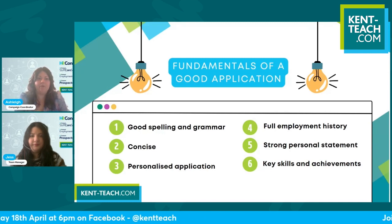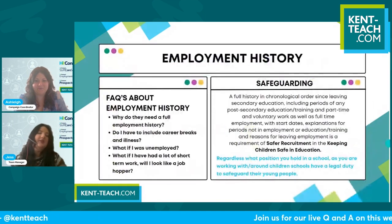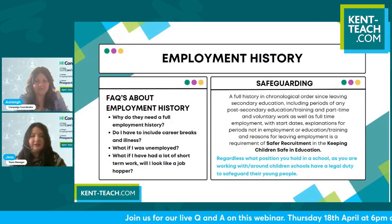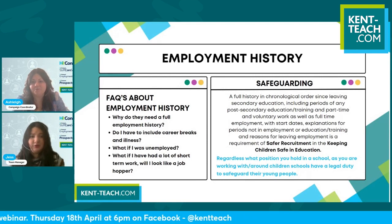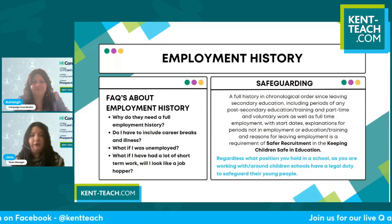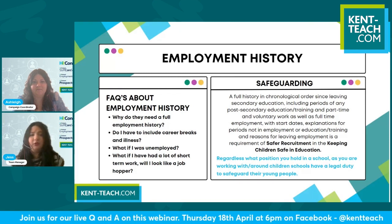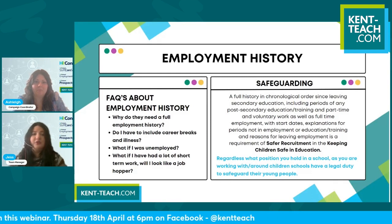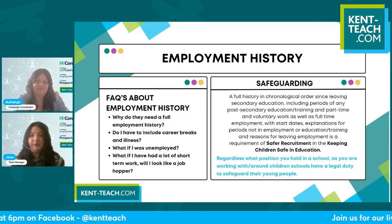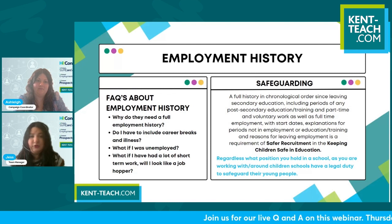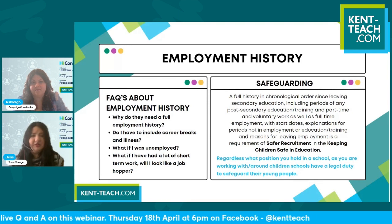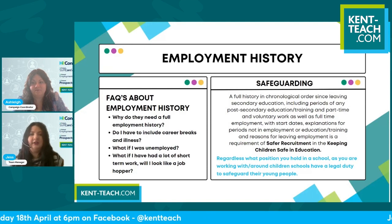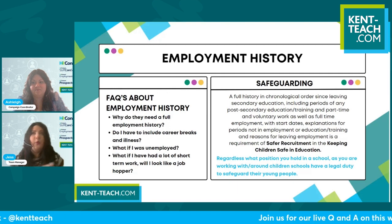Jess is now going to talk about the employment history section of the application. As we just touched on, employment history is a legal requirement for anybody working within a school. As part of safer recruitment, candidates need to provide a full chronological employment history from when they left secondary school education. The reason this comprehensive employment history is needed is due to the requirements within Keeping Children Safe in Education that schools have to follow, as you're working in an environment with children. It doesn't matter which position you are holding within a school — for example, if you're a cleaner coming in before the children's lessons begin, it doesn't make you exempt from these checks, as there's still a possibility that you could come into contact with a child even if it's not planned. Therefore, schools do have to follow these strict guidelines even within the application process.